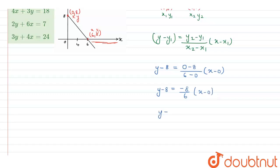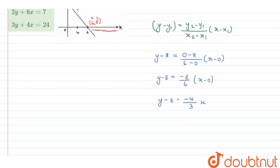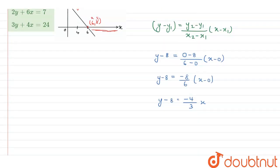That will be y minus 8 is equal to minus 4 upon 3 into x, so that is 3y minus 24